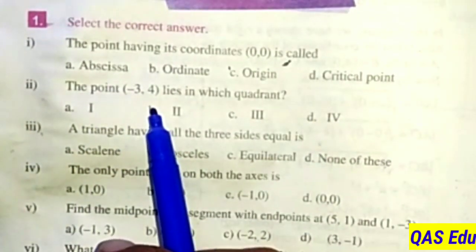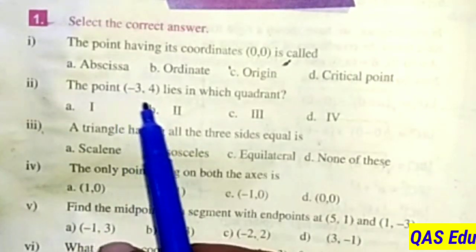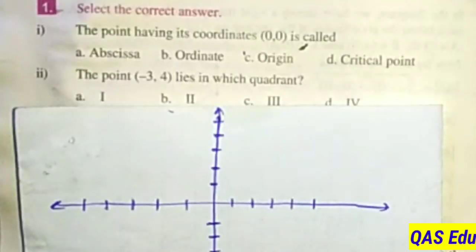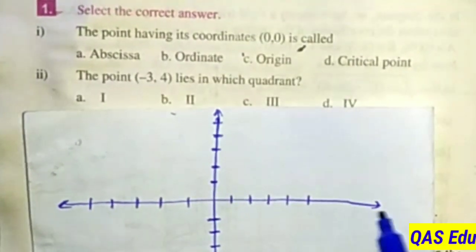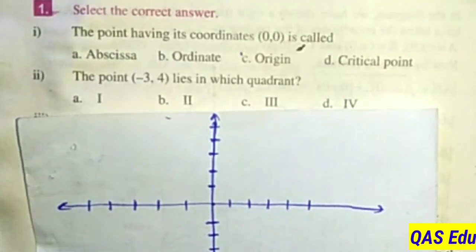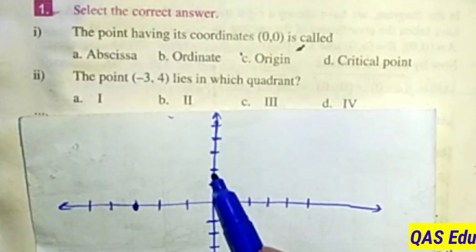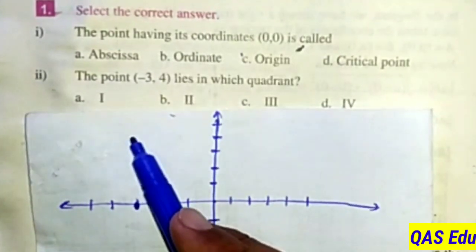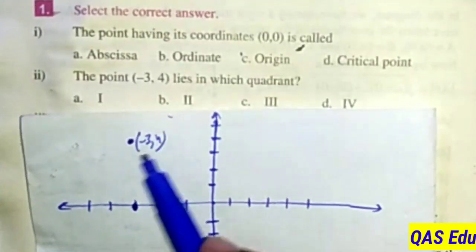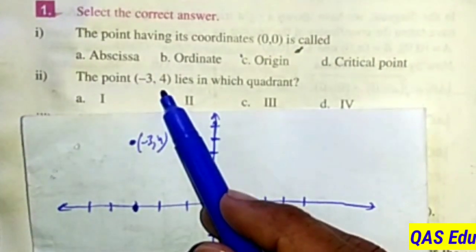When the point lies in which quadrant? We have minus 3, 4. Looking at the x-axis and y-axis, minus 3 is on the left side of the x-axis (negative x), and 4 is positive on the y-axis. So minus 3, 4 is in the second quadrant. The correct option is B.